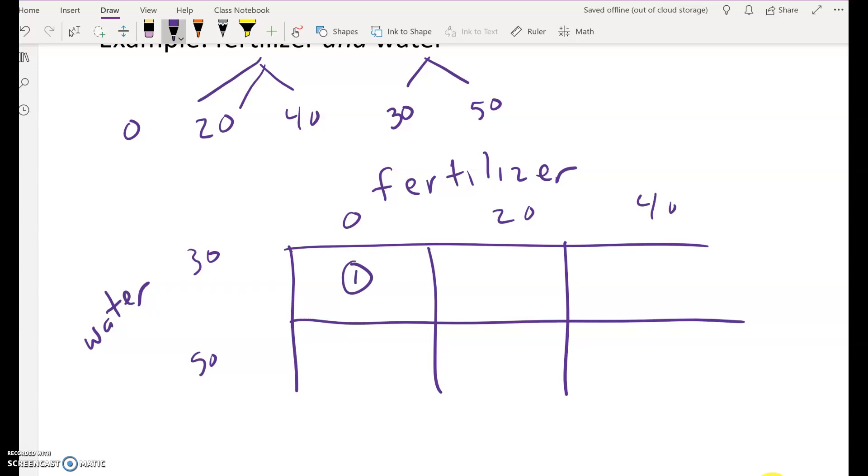And then the next plot would be 50 gallons per acre of water and zero pounds fertilizer. And then the next plot, 20 pounds fertilizer and 30 gallons water, et cetera, et cetera.